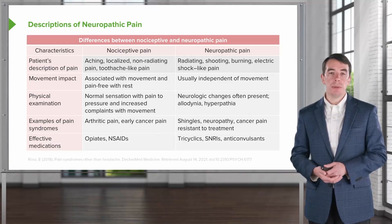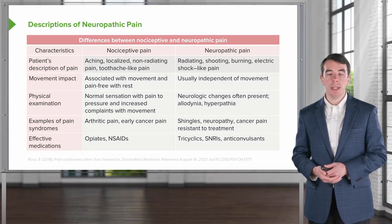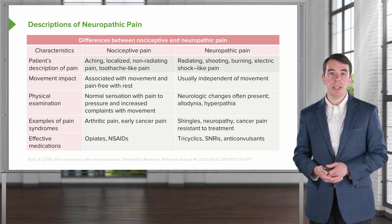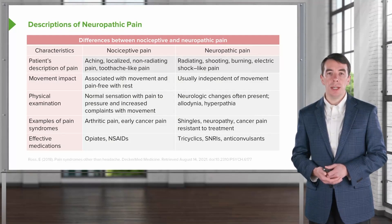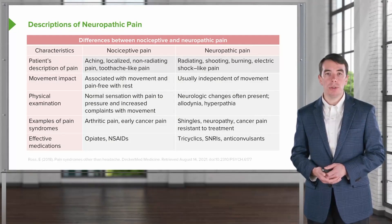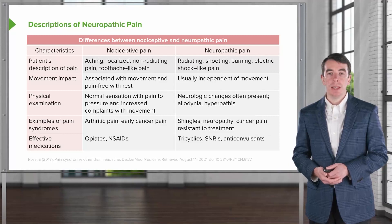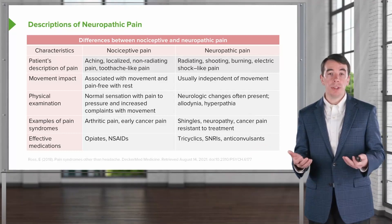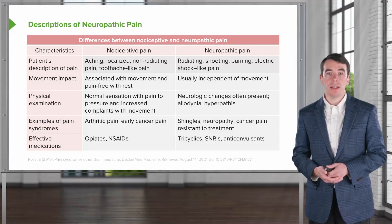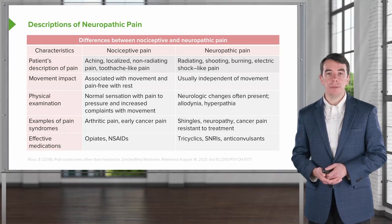In terms of effective treatments, opiates and NSAIDs have historically been used to treat nociceptive pain. Increasingly, opioids are not used to treat long-term nociceptive pain, and complementary, alternative, or surgical interventions can be used instead. For neuropathic pain, we use neuropathic pain medications including tricyclic antidepressants, SSRIs or SNRIs, and anticonvulsants.